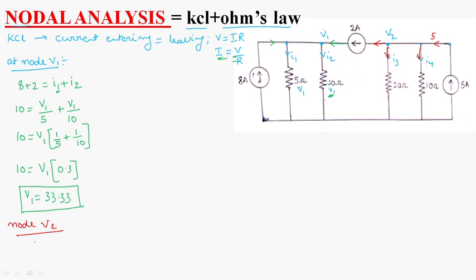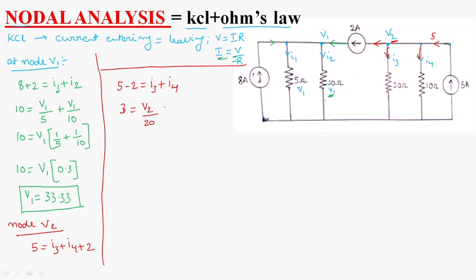So, 5 is equal to I3 plus I4 plus 2. Currents entering is equal to currents leaving. So, 5 minus 2 is equal to I3 plus I4, which is 5 minus 2 is equal to 3. I3 is equal to V2 by 20. V2 by 20 plus V2 by 10.